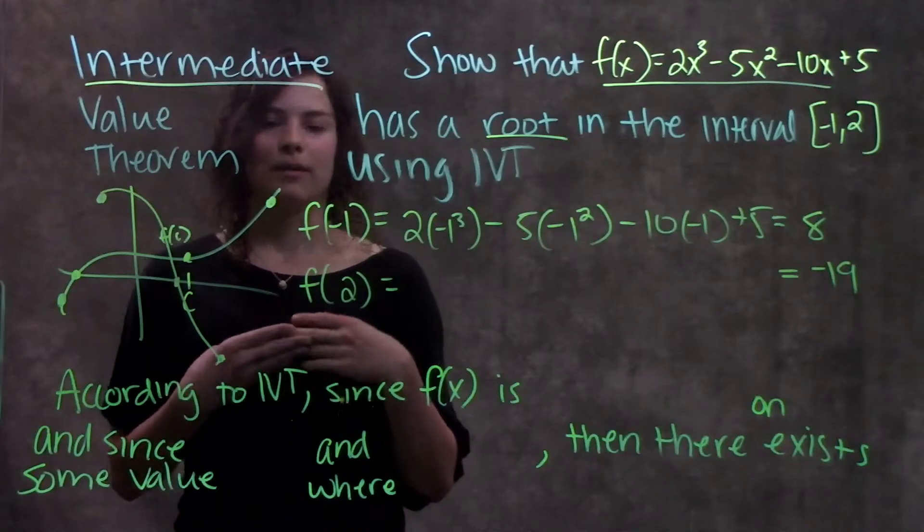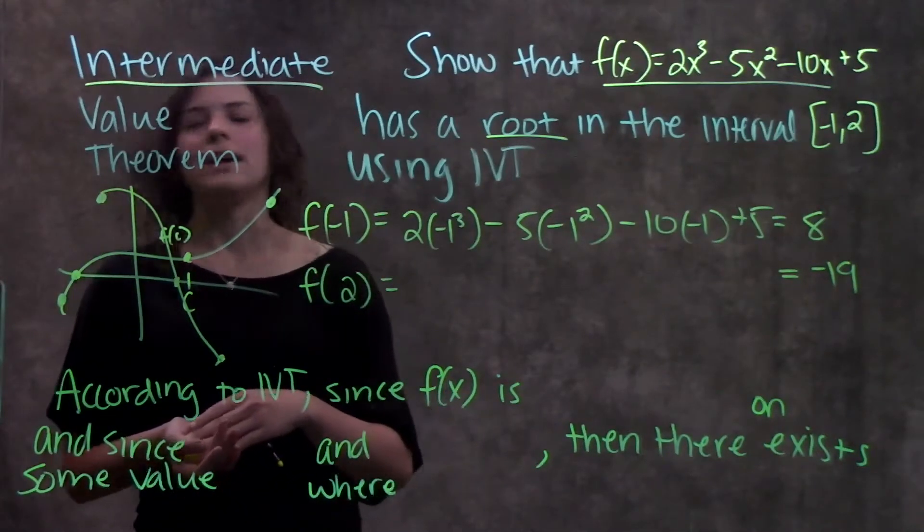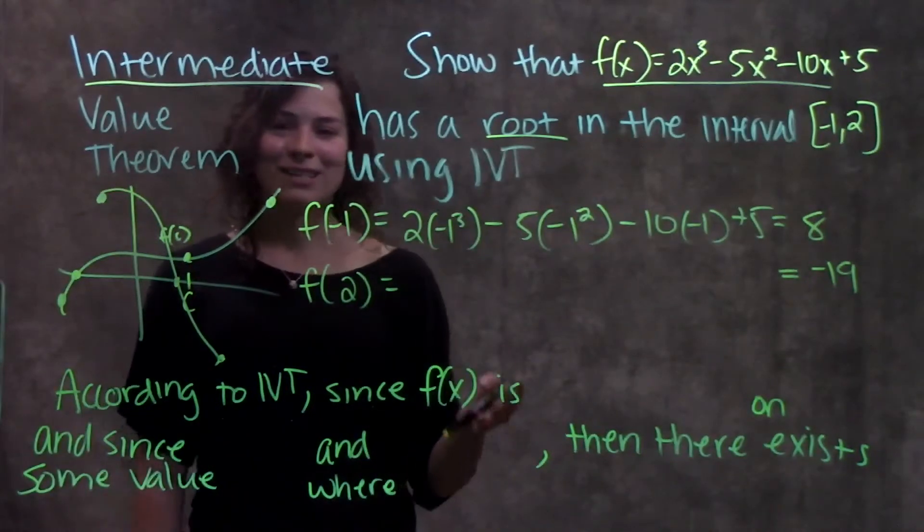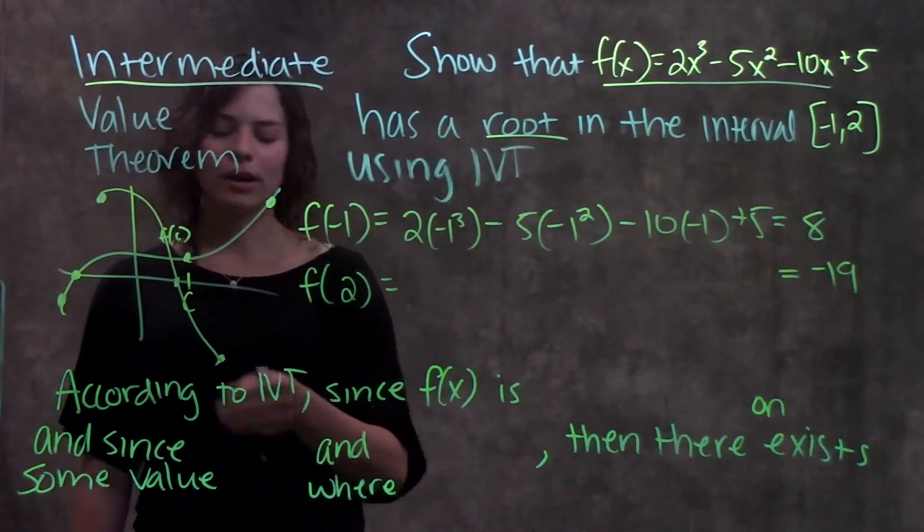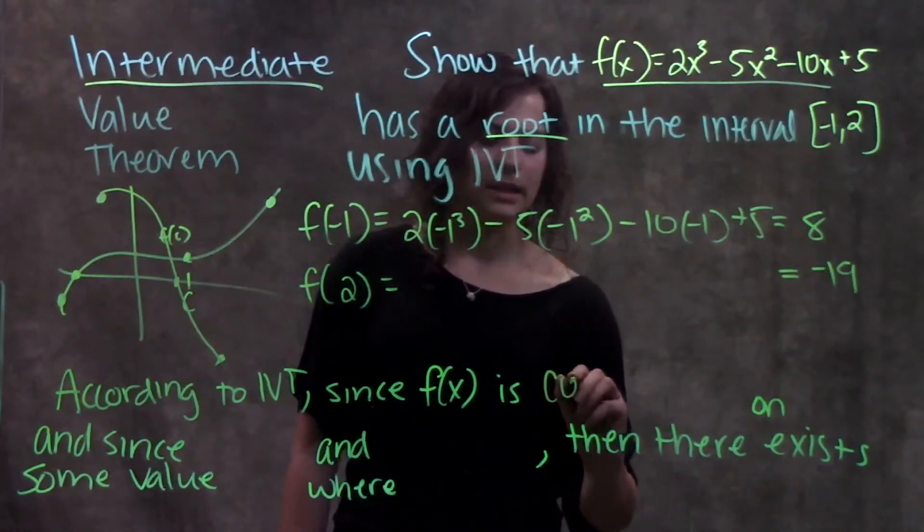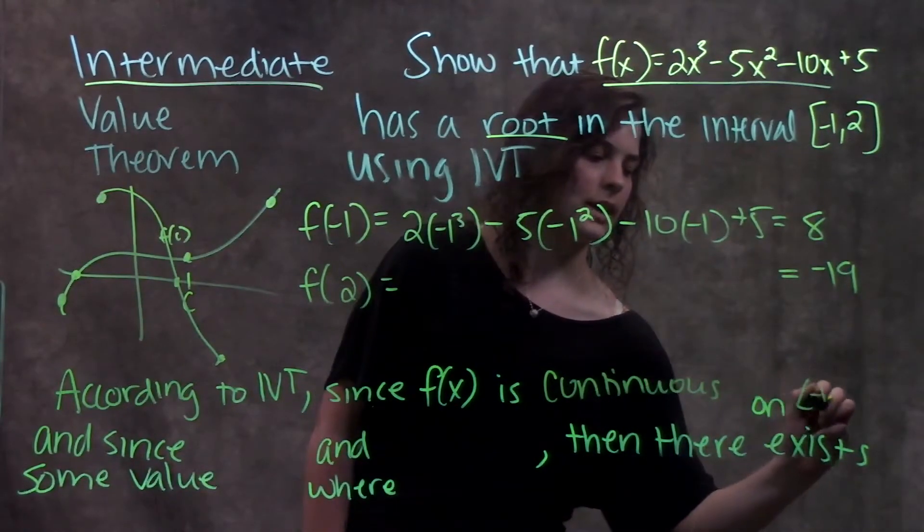Okay, but when you're writing this on a test, let's go through the words you should say, so that you say it in fancy mathematical terms. Okay, so a good way to write this as an answer is, according to the Intermediate Value Theorem, since f of x is continuous on the interval negative one to two.